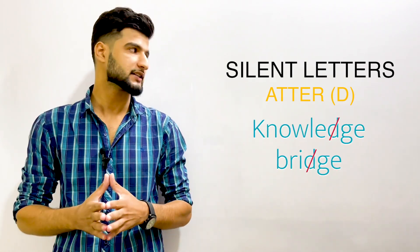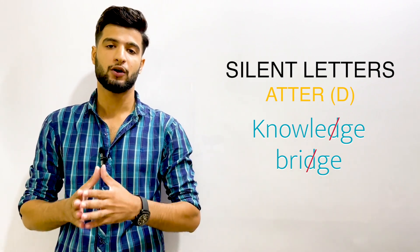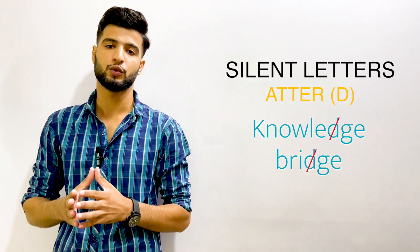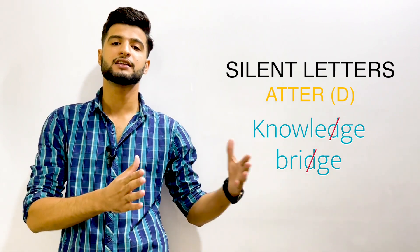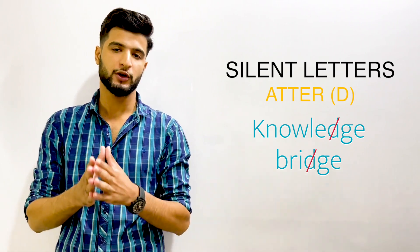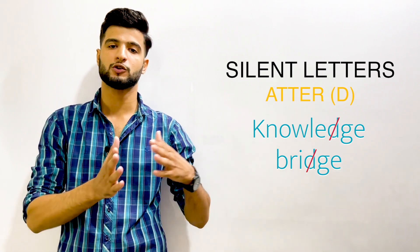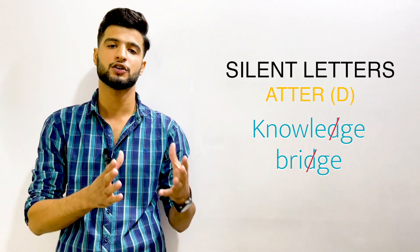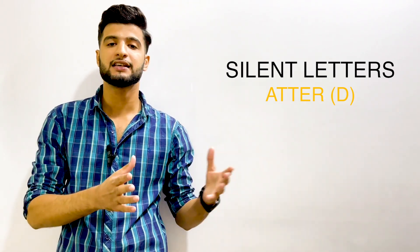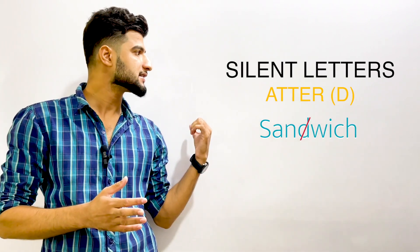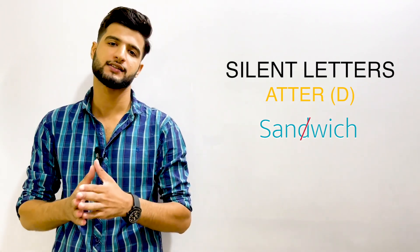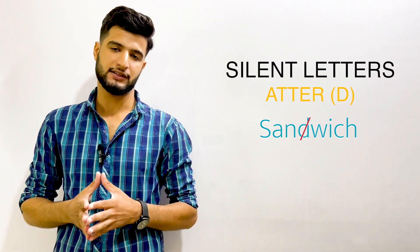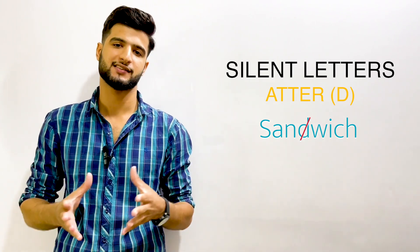The letter D is also silent when it is before G. In words like 'knowledge' and 'bridge,' D comes before G, forming a consonant cluster. The D and G together are pronounced as 'j,' so we say 'knowledge' and 'bridge.' The letter D is also dropped in words like 'sandwich' — it's 'sandwich,' not 'sand-wich' — and 'handsome,' pronounced 'hansome,' not 'handsome.'